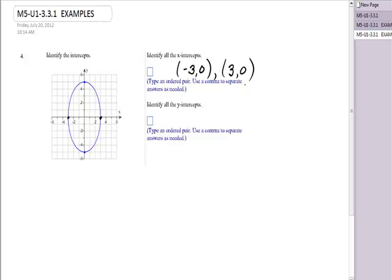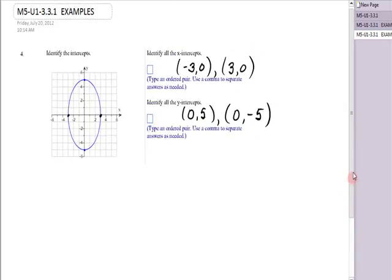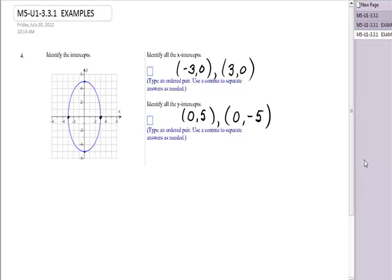Then for the y-intercepts, doesn't matter which one you do first. I'm going to look at the top. That is zero, comma, five. Because to get to that location, I would not go right or left. Therefore, zero, but up five, comma. And the last one is zero, comma, negative five. So that has been some practice in identifying intercepts.